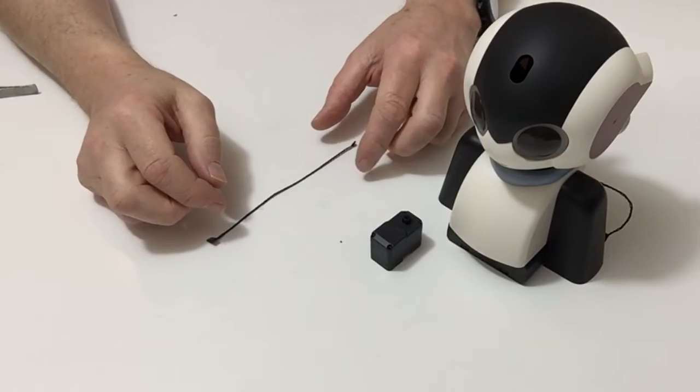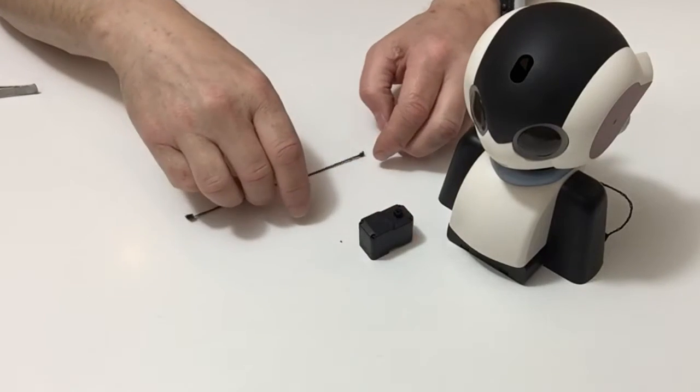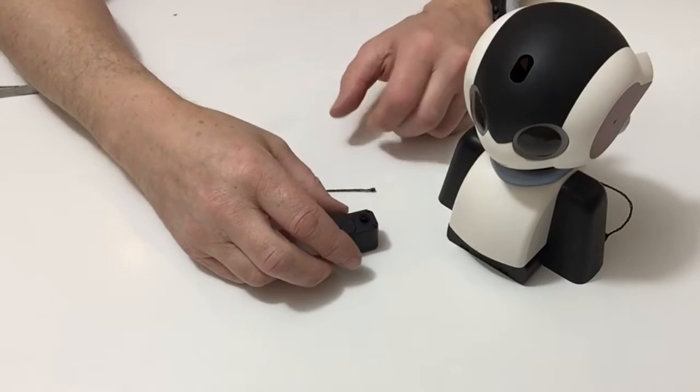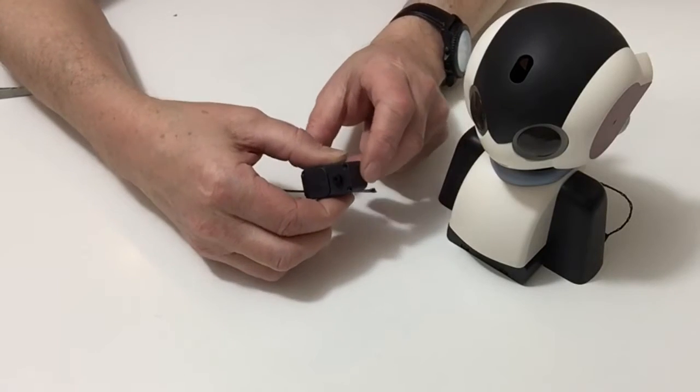In stage 33 we get another servo and once again we are going to be assigning this servo with the ID of 2.